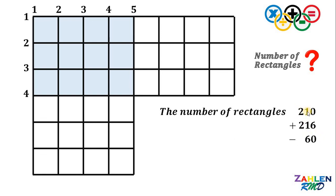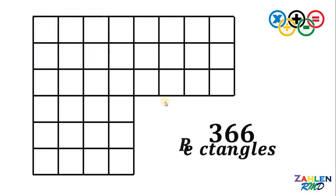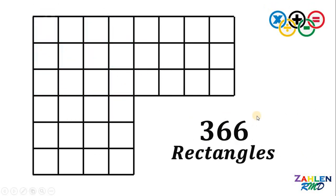So we have 210 plus 216 minus 60, which gives a total of 366. Therefore, the total number of rectangles in this grid is 366. And as always, we are done!